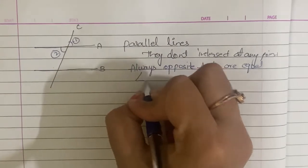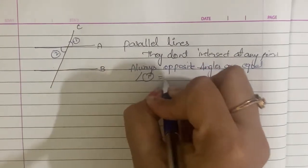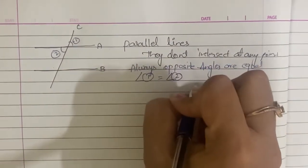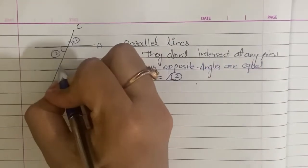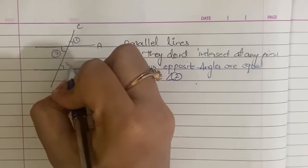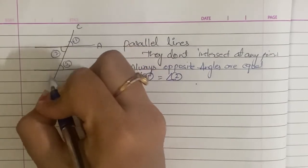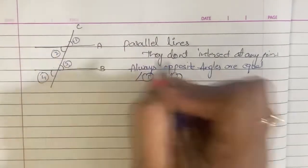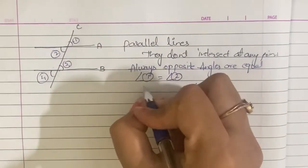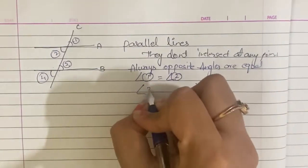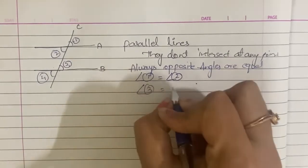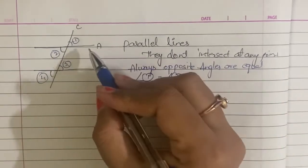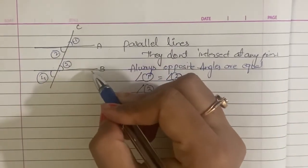Angle 1 is equal to Angle 2. Similarly, Angle 3 is equal to Angle 4. If two parallel lines intersect,